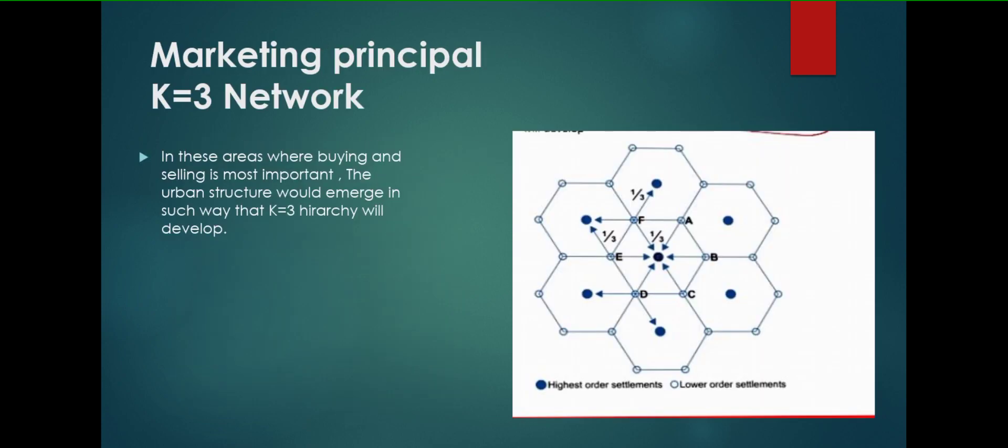Let's come to the first principle, that is marketing principle, called K3. In the areas where buying and selling is most important, the urban structure would emerge in such a way that K3 hierarchy will develop. For example, the central place will be in middle and there will be small places all around it, and the marketing principle will work according to it and the K3 principle will work.